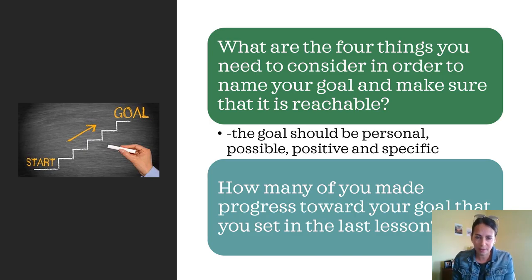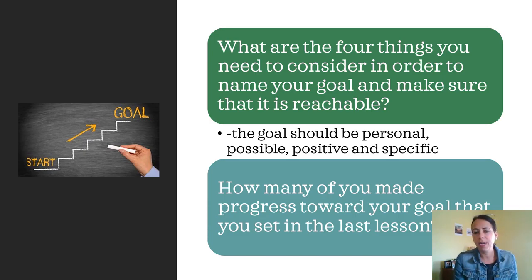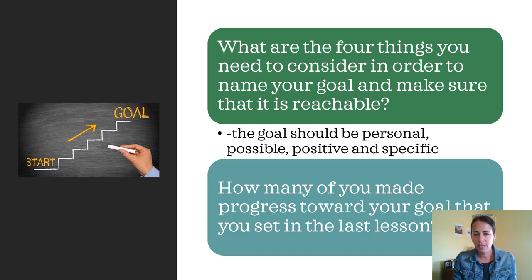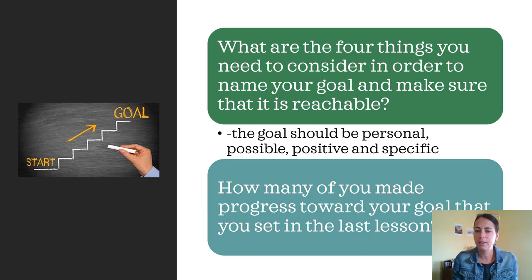Also it must be possible — something where you have the resources and the time to accomplish it. Remember to name your goal in positive action words, making sure that you are stating what you want instead of what you don't want. And remember to be specific — set a measurable amount of time and be specific in what you want to reach.